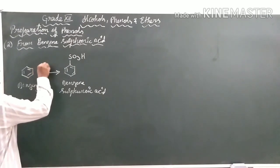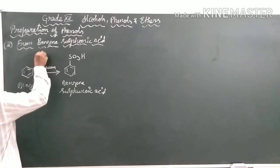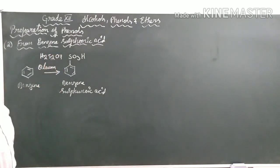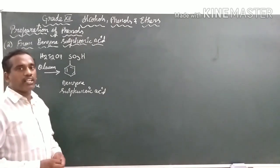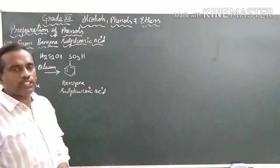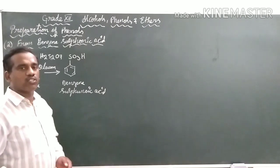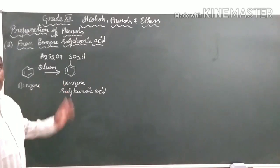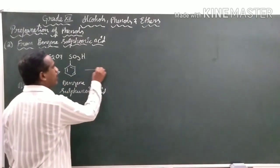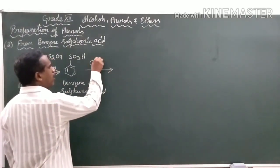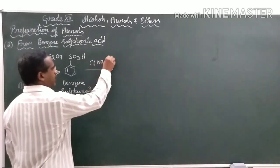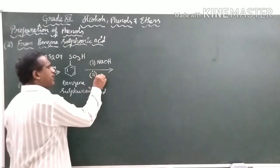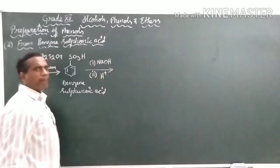Oleum is the compound having the formula H₂S₂O₇. Another method we learned previously is when benzene is reacted with concentrated sulfuric acid, we can also prepare benzene sulphonic acid. Now, this benzene sulphonic acid will be reacted with sodium hydroxide and later treated with a mineral acid.